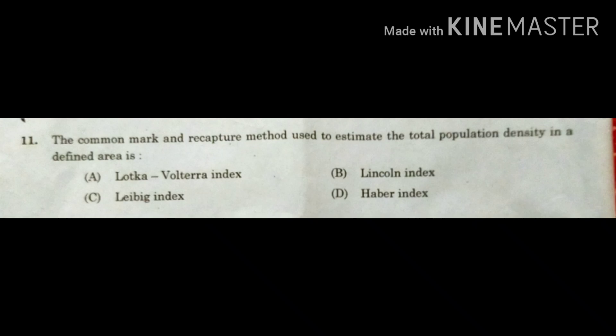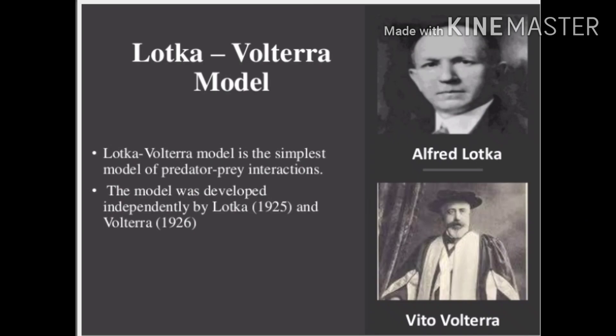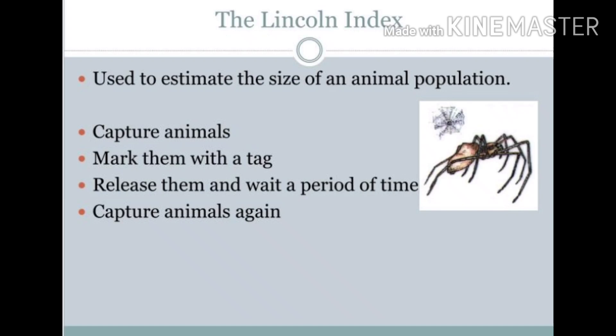First, we can briefly understand all these options. The Lotka-Volterra model or Lotka-Volterra index was first proposed by Lotka and Volterra to explain the prey-predator relationship. So remember, the Lotka-Volterra model is associated with the prey-predator relationship. The next one is the Lincoln index, which is widely used to estimate animal population size in a particular area.